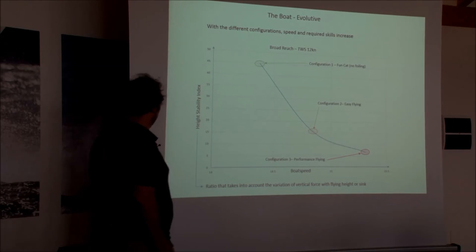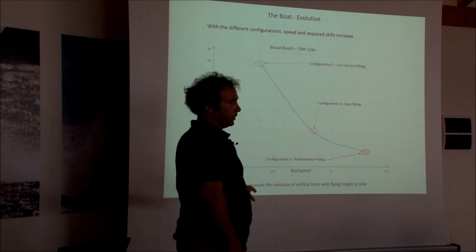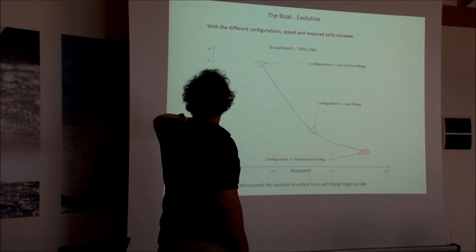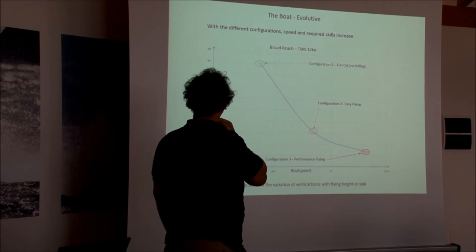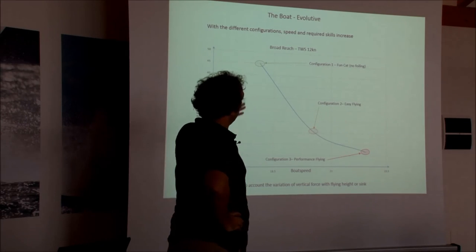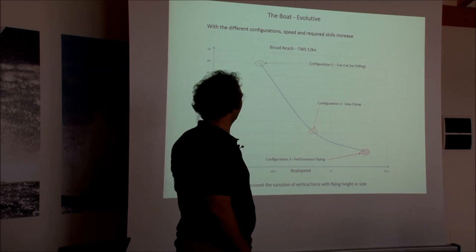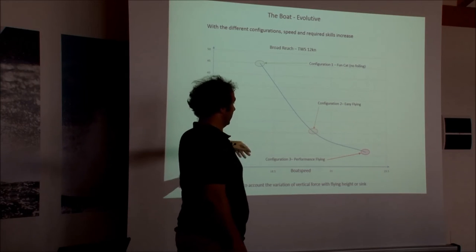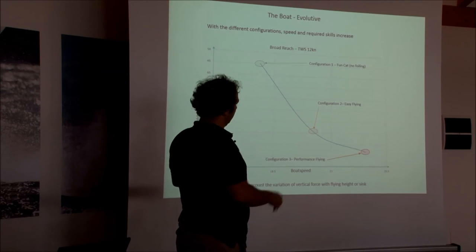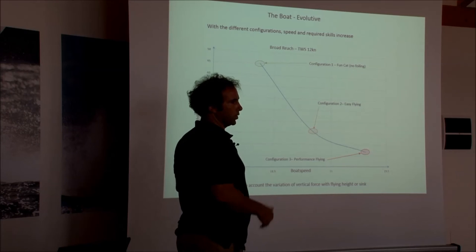This graph is also interesting. It shows the stability in function of the different configurations. Here you have an idea of the boat speed and what we call the height stability index which gives us an index of the stability. Configuration one, which is the one with a straight board, is stable. We've got configuration two, easy flying, which is there so it is stable. The more you go to the L, after you go to the L shape, you lose stability but you gain in speed.